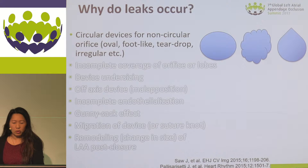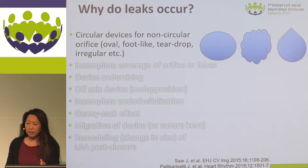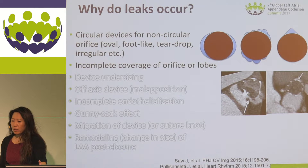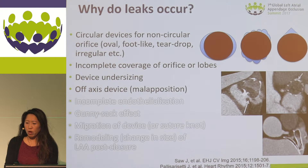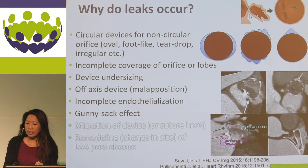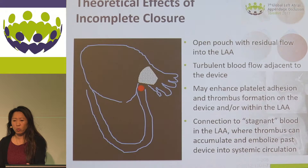So why do leaks occur? There are really numerous reasons, but most importantly, we're utilizing circular devices for typically a non-circular orifice in over 90% of cases, and this results in incomplete coverage of these orifices or lobes. Other reasons include device undersizing, malapposition of the device such as where the lobe is off axis, even incomplete endothelialization. In the cases of layered devices, the central leak, so-called gunny sack effect. And even late leaks can occur from migration of devices or the suture knot, as well as remodeling of the atrial appendage after closure.